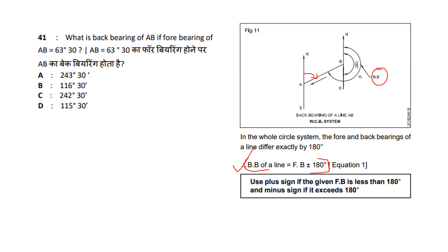This is the condition: if the fore bearing value is less than 180 degrees, we use the plus sign — back bearing equals fore bearing plus 180. If the fore bearing exceeds 180 degrees, we use the minus sign — back bearing equals fore bearing minus 180.